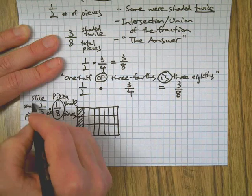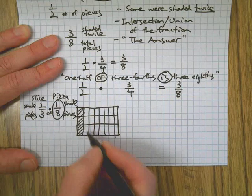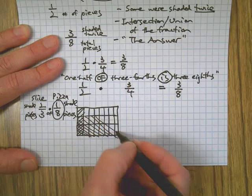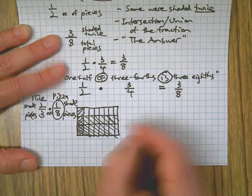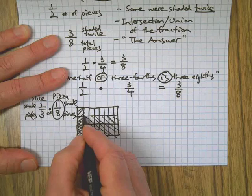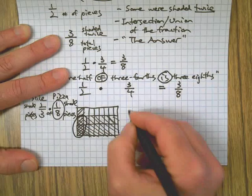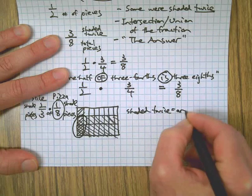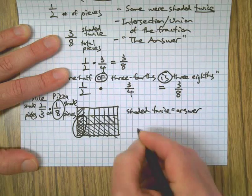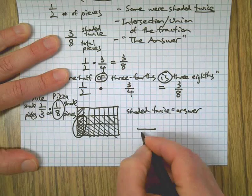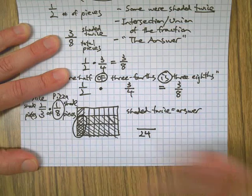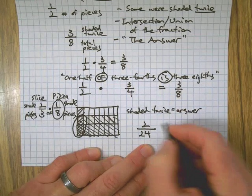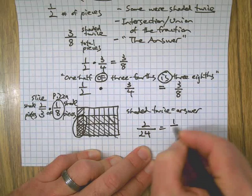Then I'm going to make three pieces going in the other direction. All right, one, two, three pieces. I'm going to shade going the other direction, two out of those three. So you see, represented here by the pieces that got shaded twice, is the answer. Okay, total number of little boxes here: 24. Shaded twice: two. We can simplify that to one-twelfth.